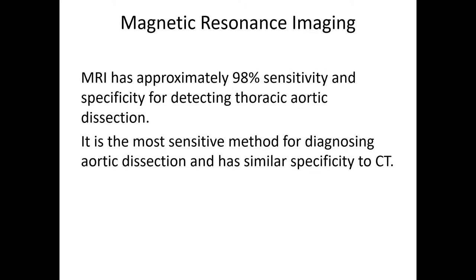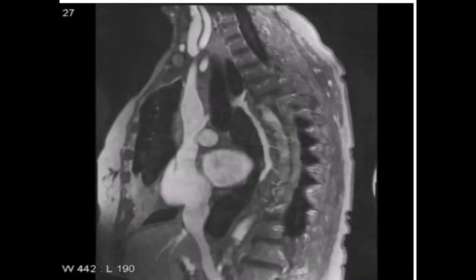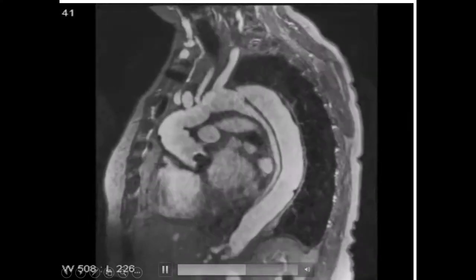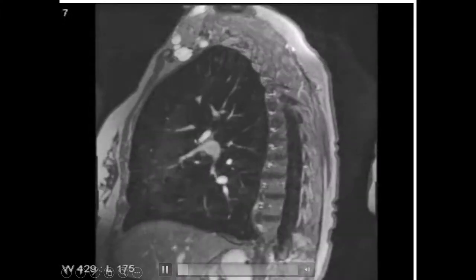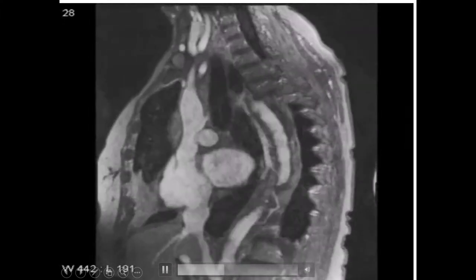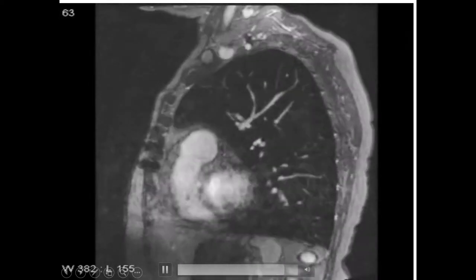MRI has very high sensitivity and is the most sensitive method for diagnosing aortic dissection, with specificity comparable to CT scan. On MRI of an aortic dissection, you can see a line representing the intimal flap — this line represents acute aortic dissection.